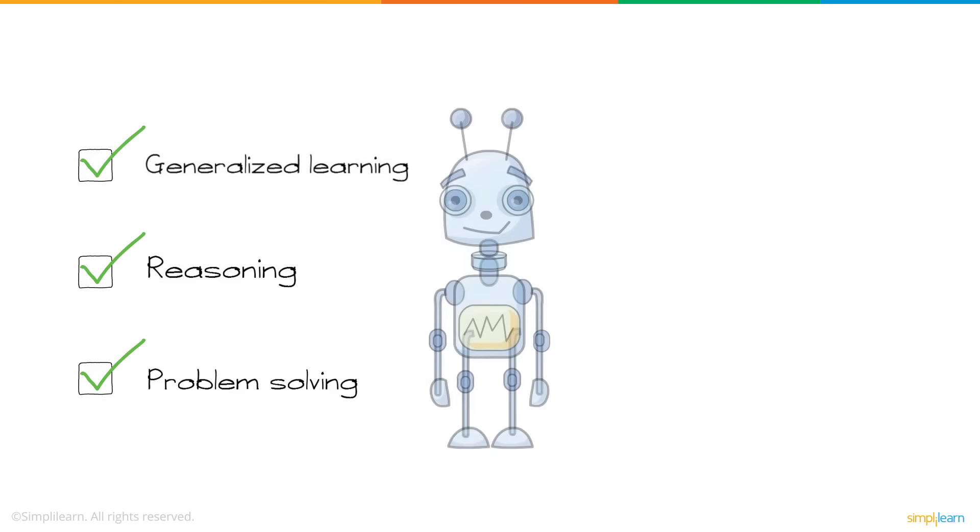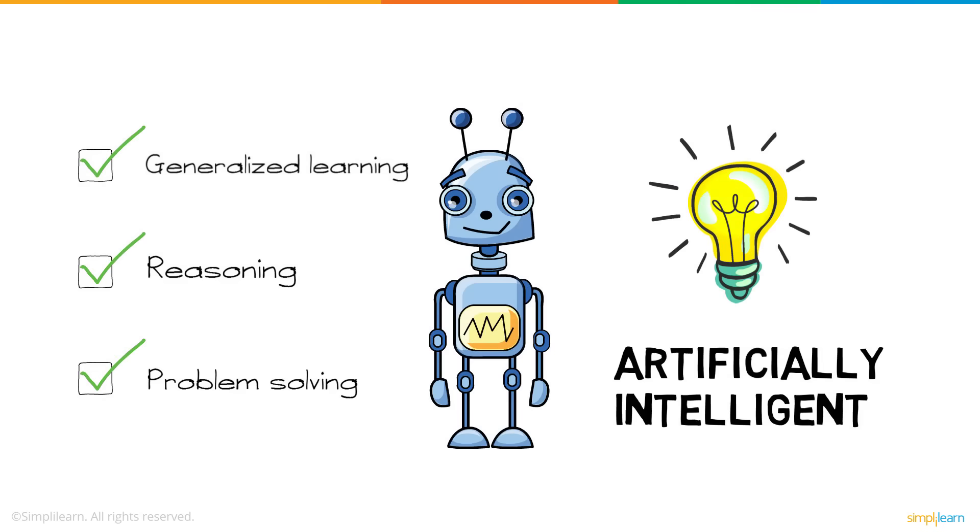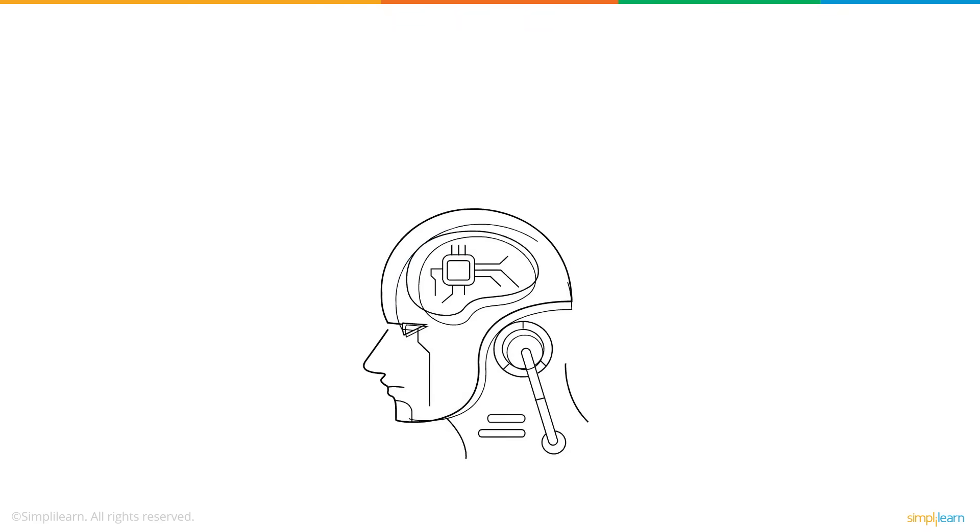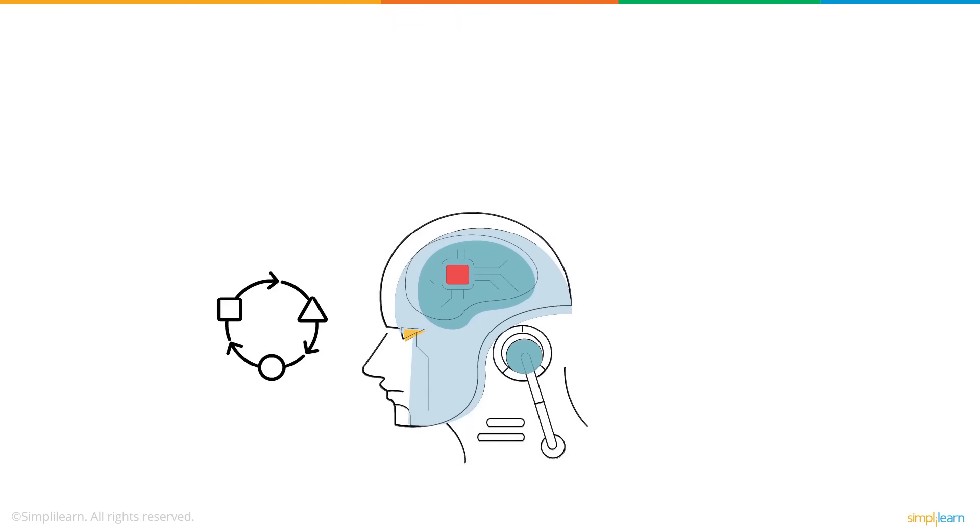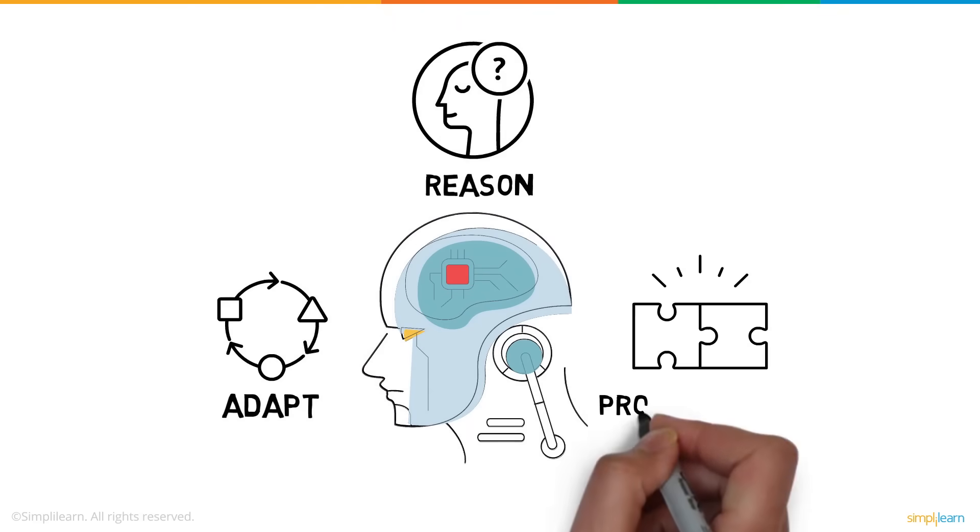These three capabilities make the robot artificially intelligent. In short, AI provides machines with the capability to adapt, reason, and provide solutions.